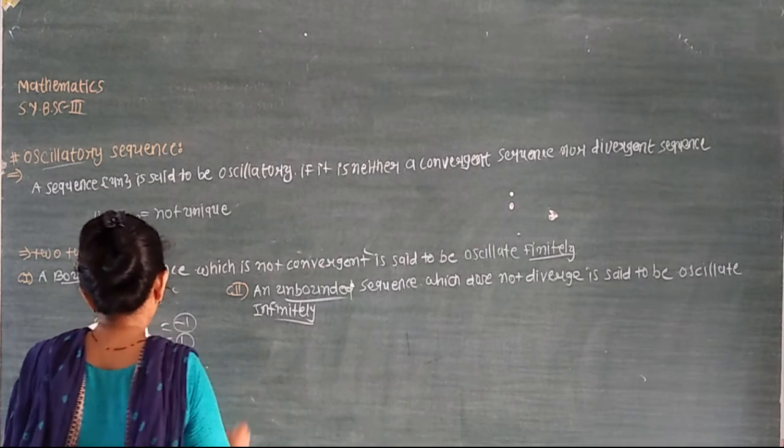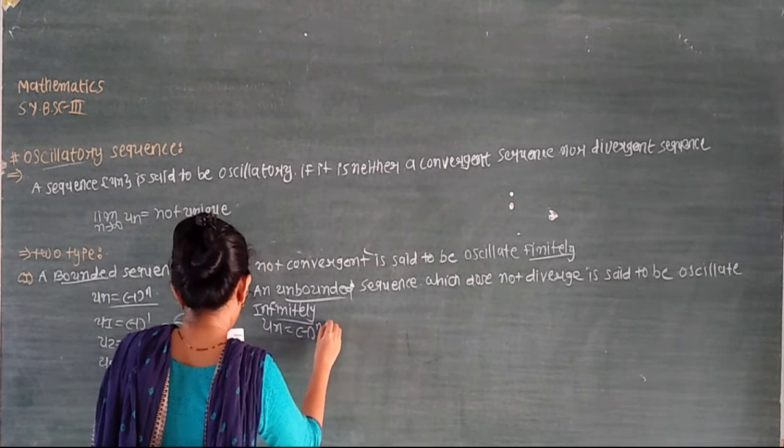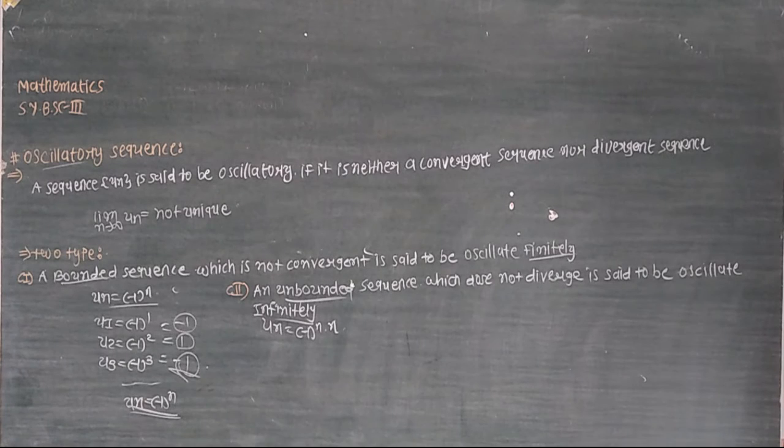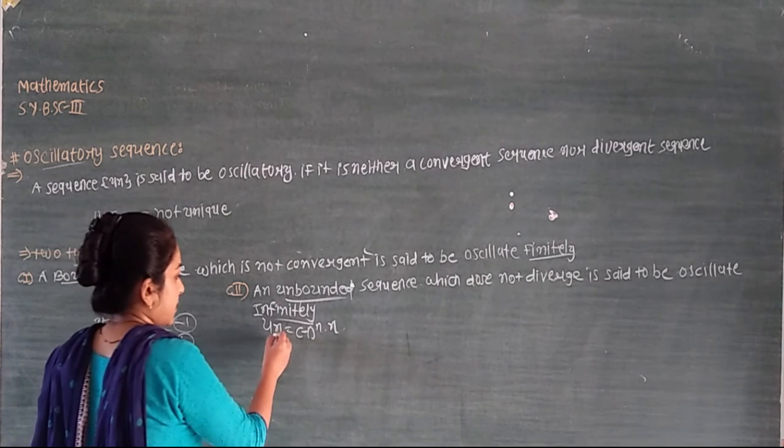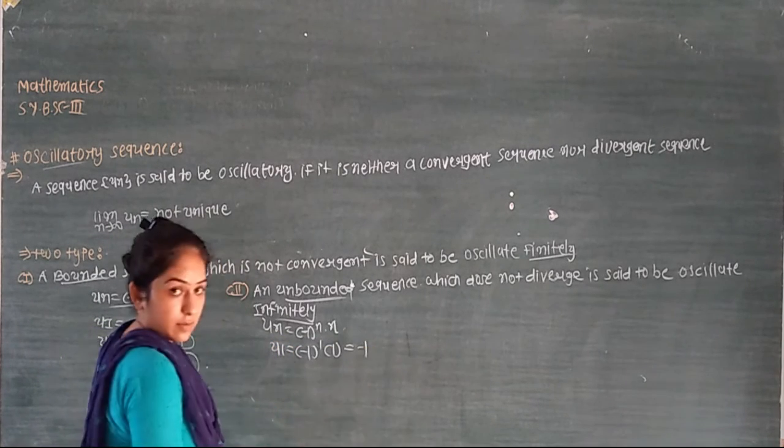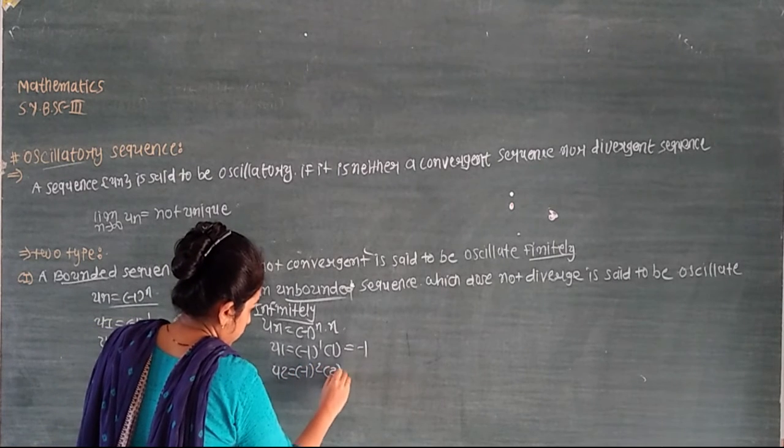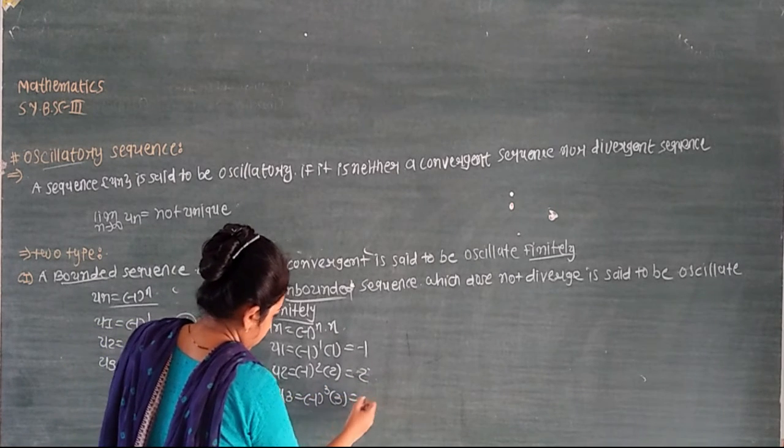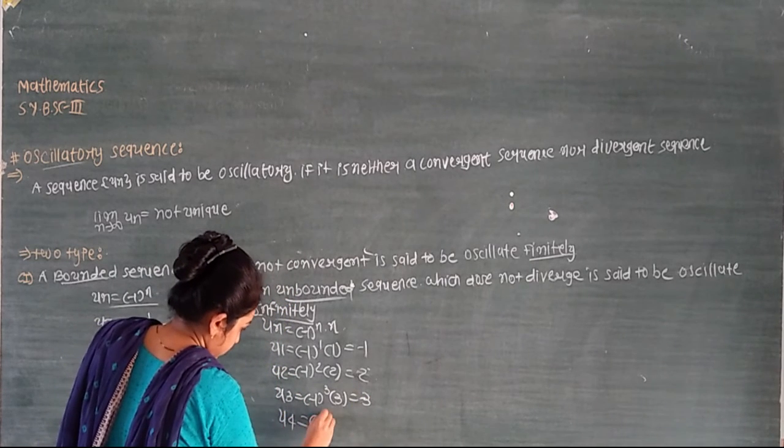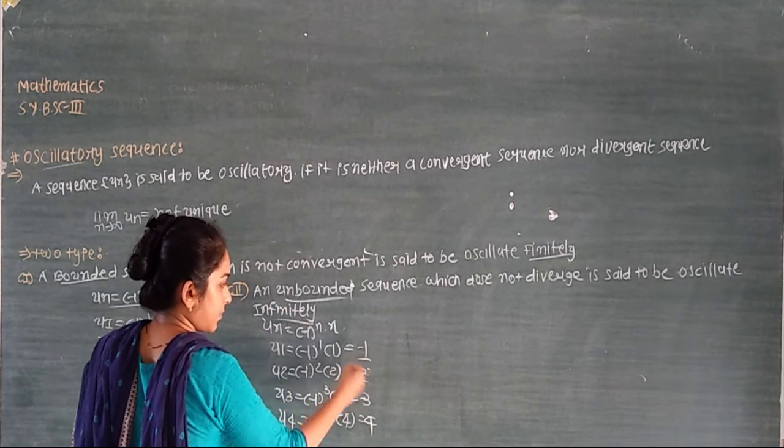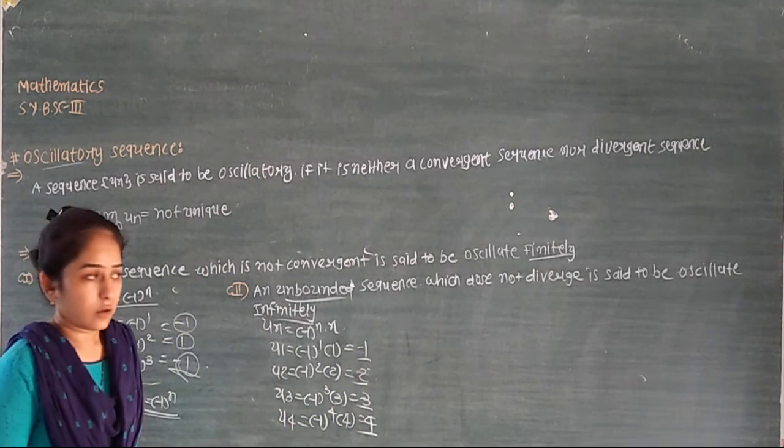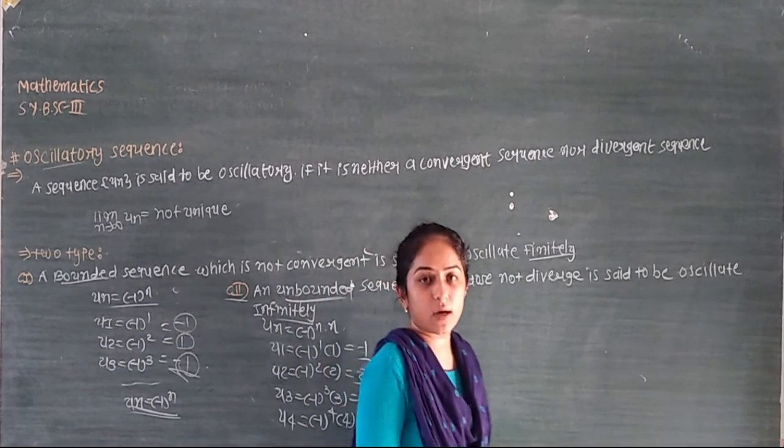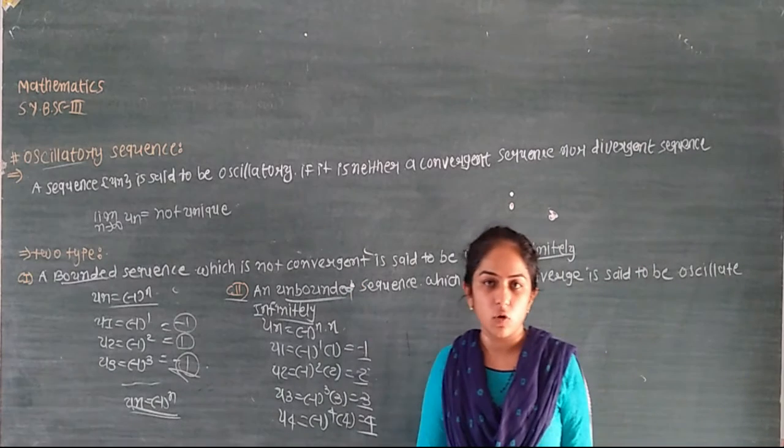So I have an example here. u_n is equal to minus 1 raised to n times n. So u_1 equals minus 1, u_2 equals minus 1 raised to 2 times 2 which is 2, u_3 is minus 1 raised to 3 times 3 which is minus 3, u_4 is minus 1 raised to 4 times 4 which is 4. You can see the sequence will oscillate and not converge. So you can see that this sequence is unbounded.